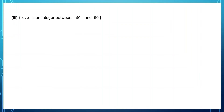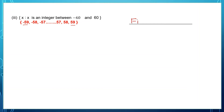Third one: this is given in set builder form — x is such that x is an integer between minus 60 and 60. Let's write down all the integers between -60 and 60. We have a starting number and an ending number, so this is a finite set — you can count the number of elements.